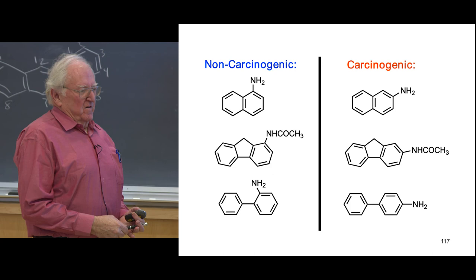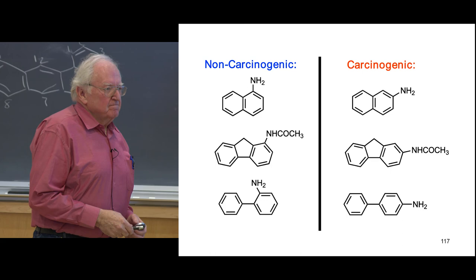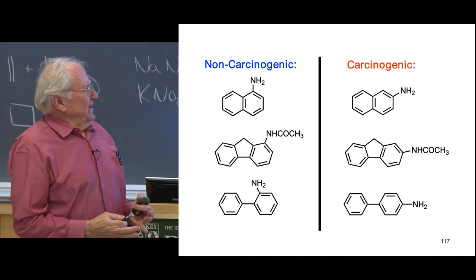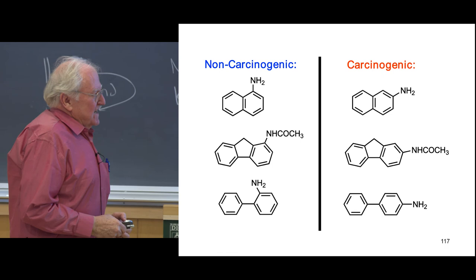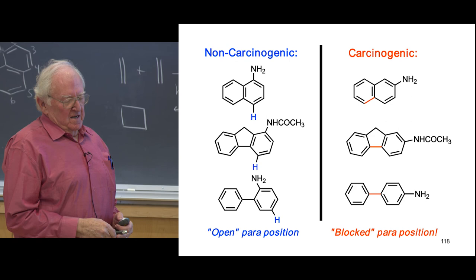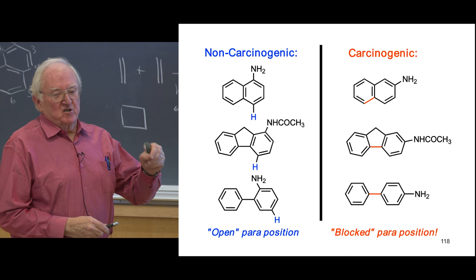It has to do with where metabolism occurs — which we're going to see tomorrow. If you have an open para position — meaning H, paired to the nitrogen — then it will not be carcinogenic. The carcinogenicity has to do with where the compound is metabolized in the ring.